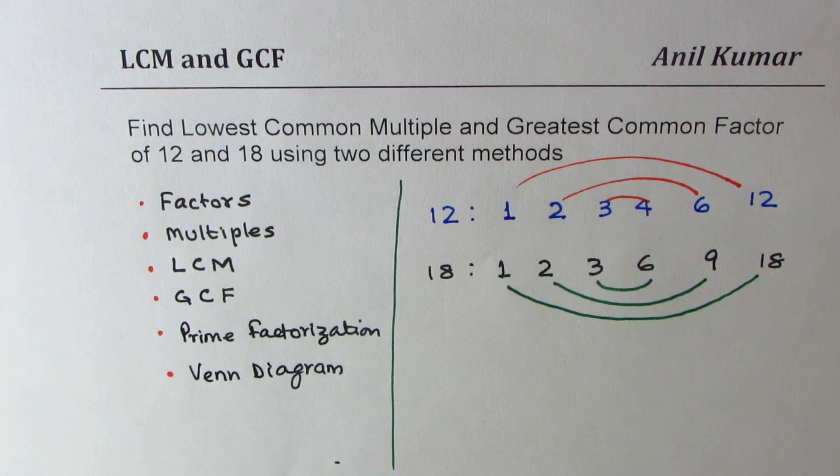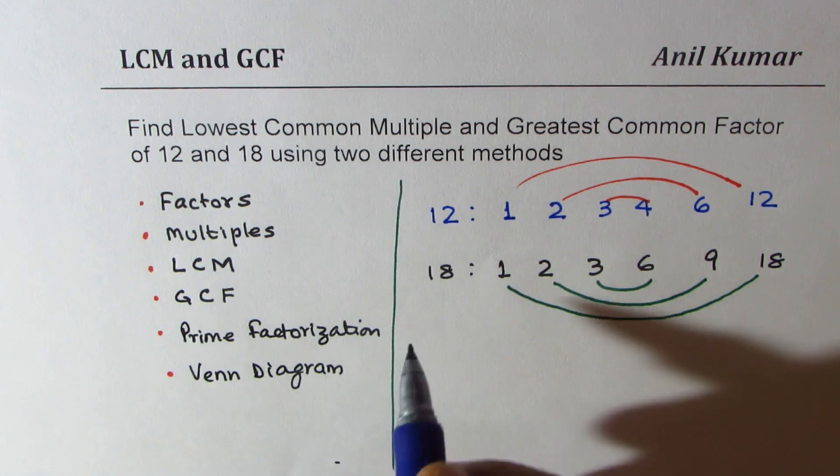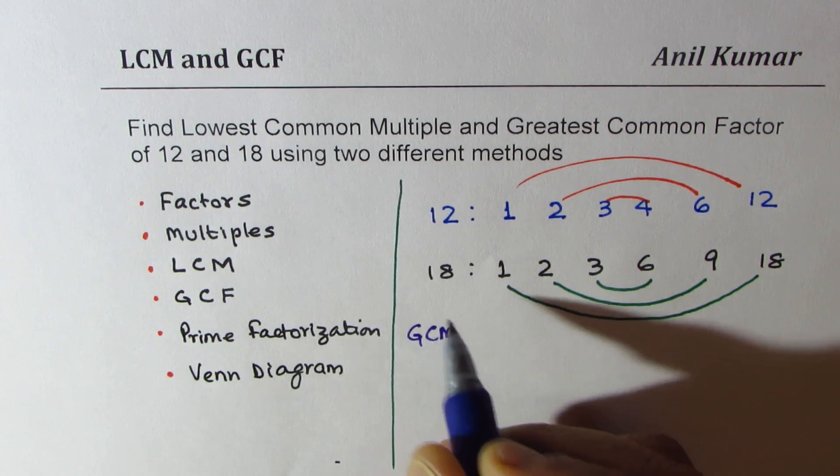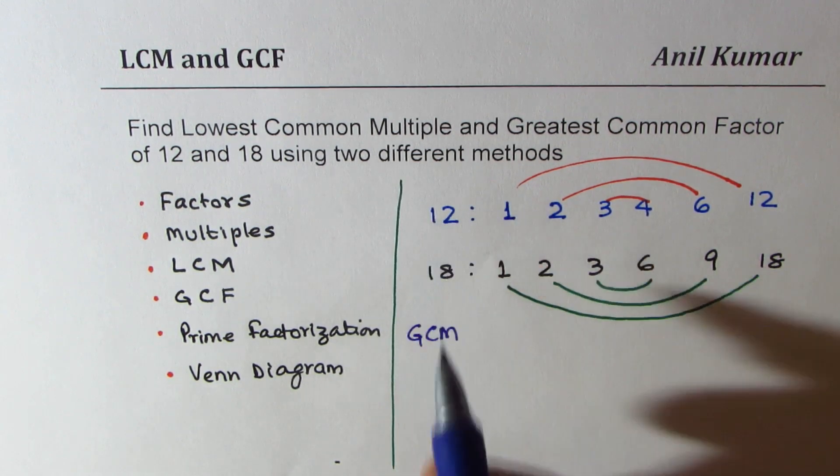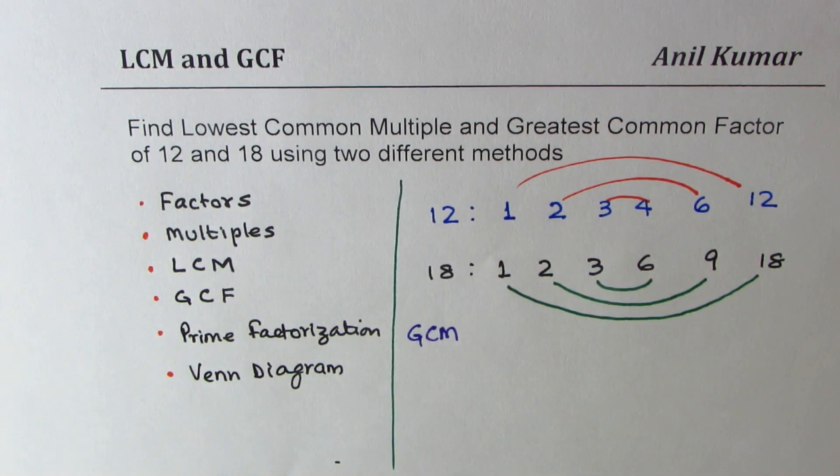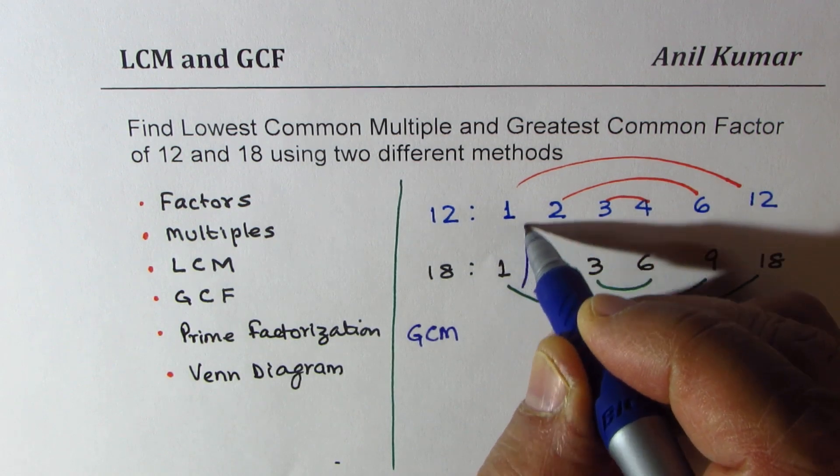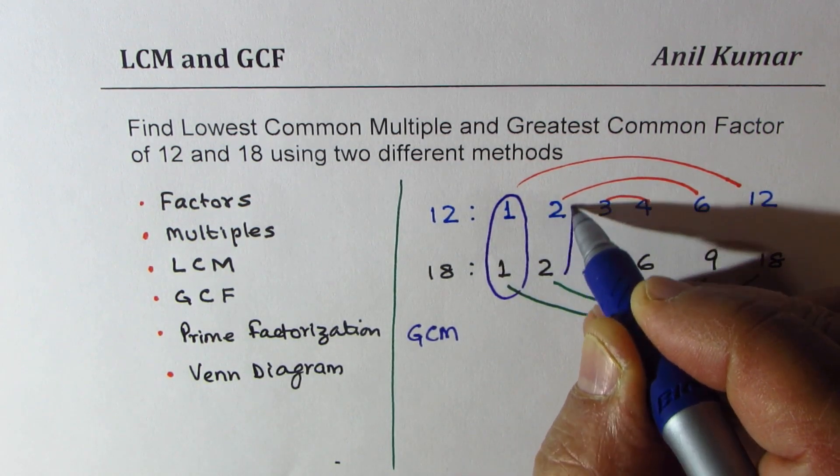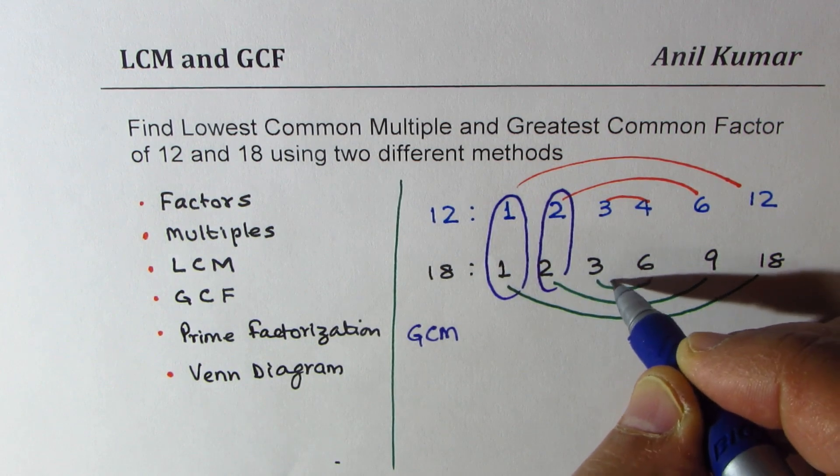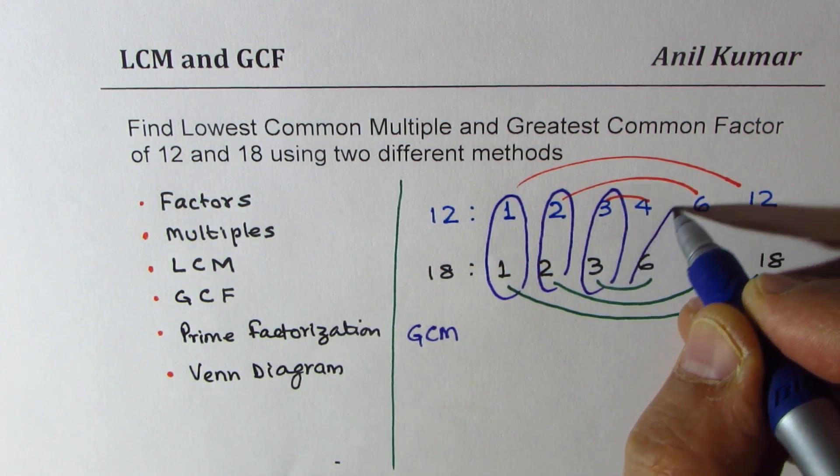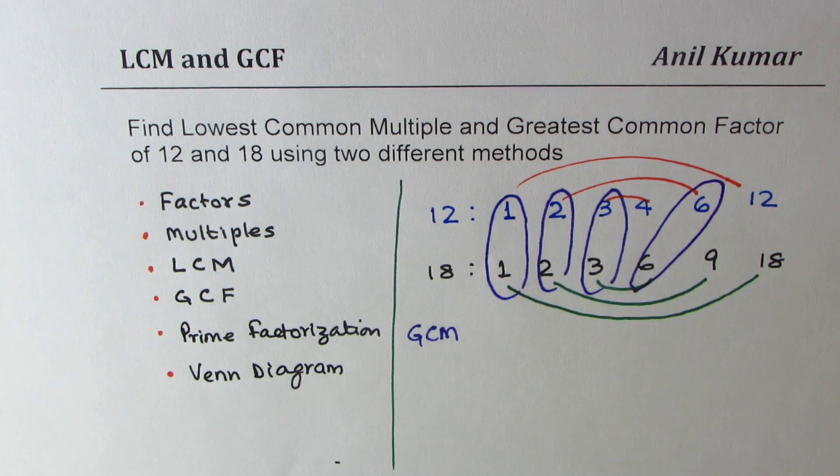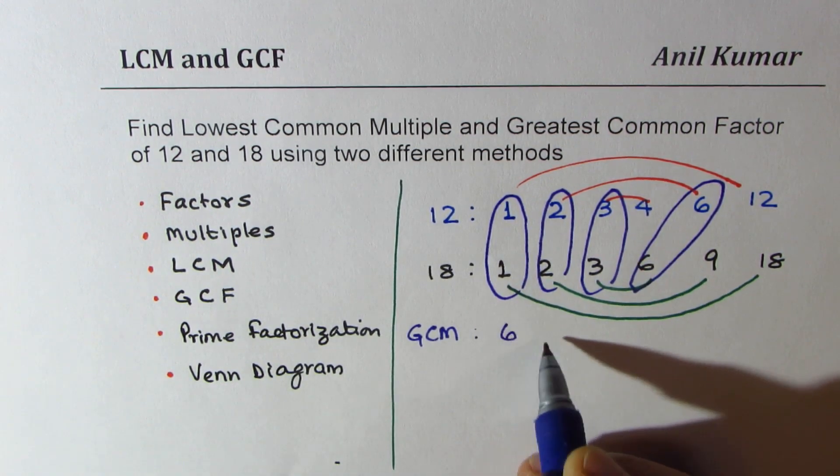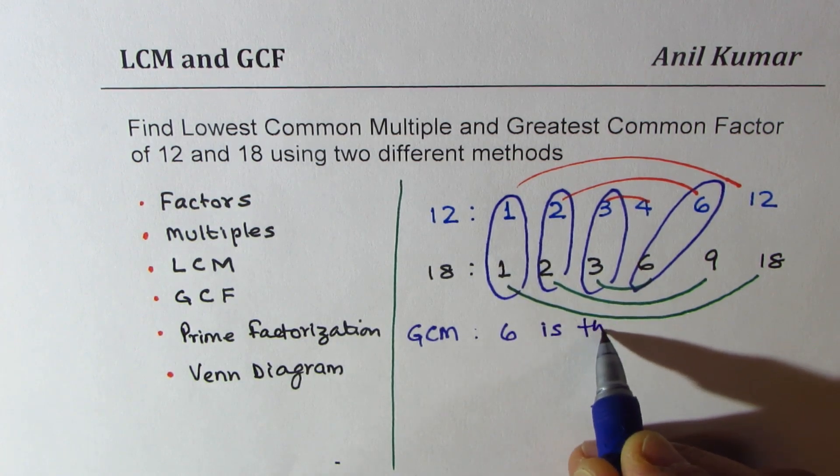Now we'll look into greatest common factor. Between 12 and 18, let me point out the numbers which are common factors. We see that 1 and 1 is a common factor, 2 and 2 is also a common factor, 3 and 3 is also a common factor, and 6 and 6 is also a common factor. Amongst these common factors, 6 is the greatest.